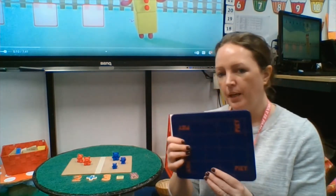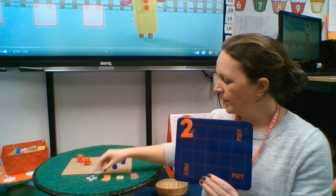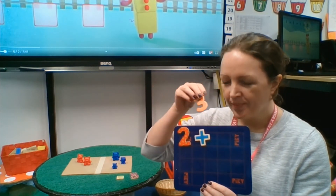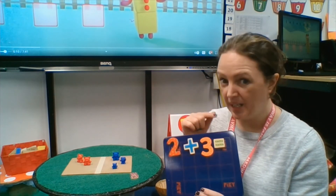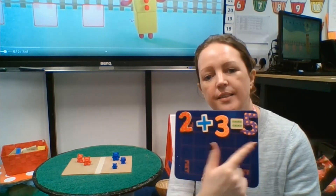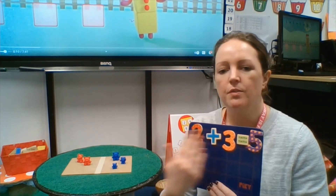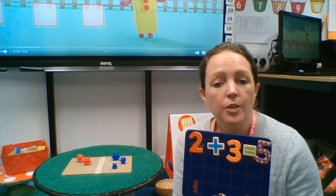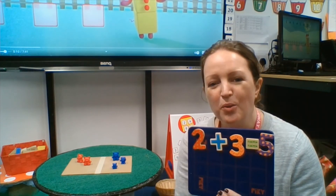Let me just stick it onto my magnetic board so you can see. Two — what was this sign called? That's it, add. Three. And what does that mean? Equals five. And this is a number sentence. So we've used our bears to help us write a number sentence. What I would like you to do is see if you can find some objects that you can count and write a number sentence and send in a photo.